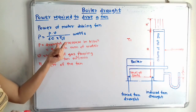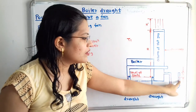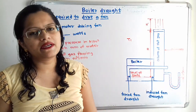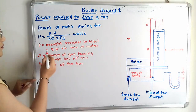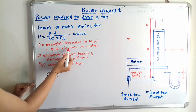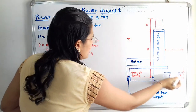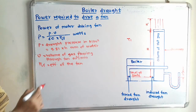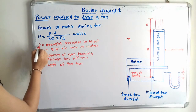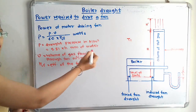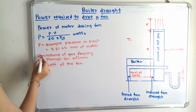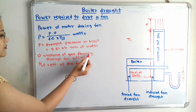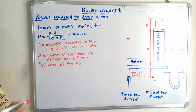Small p is the drop pressure with unit Newton per meter square. When expressing drop pressure using a manometer in millimeters of water, we write: p = 9.81 × h, where h is in millimeters of water. So we can use either p in N/m² or 9.81 × h in the formula. V is the volume of gas flowing through the fan in m³/min, and η_f is the fan efficiency.